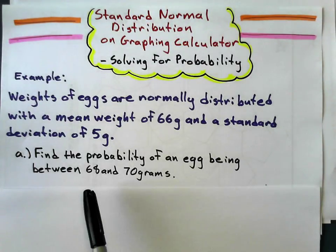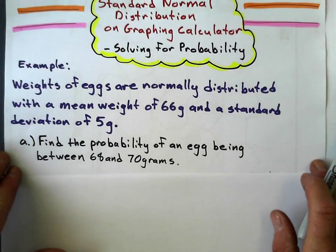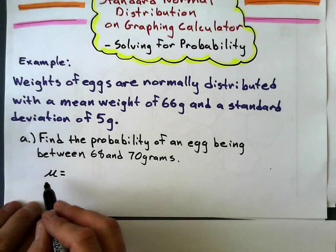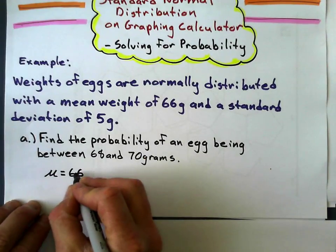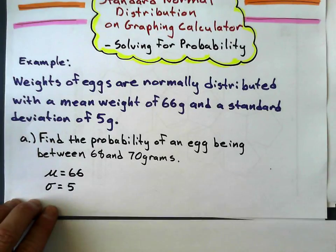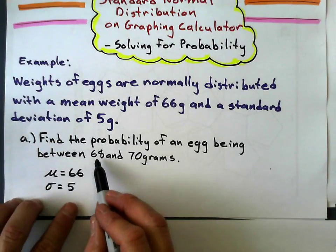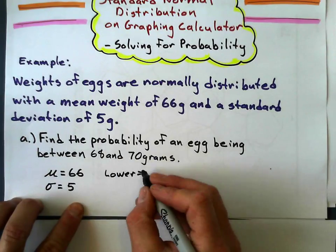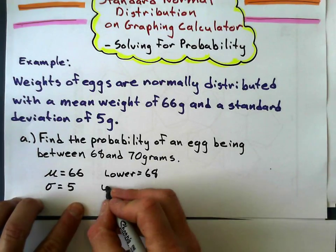What's the probability of an egg being between 68 and 70 grams? In terms of the graphing calculator, I need to know four things: my mean, which is 66, standard deviation, which in this case is 5, my lower value, which is 68 in this case, and my upper value, which is 70.